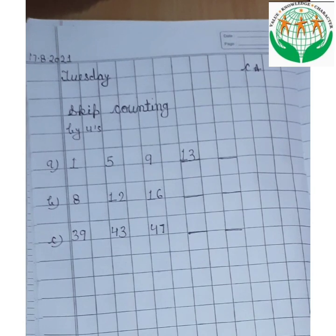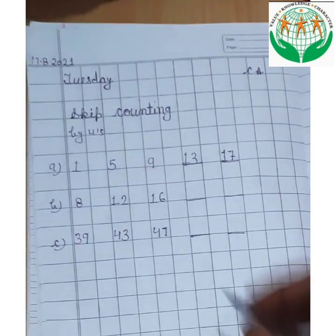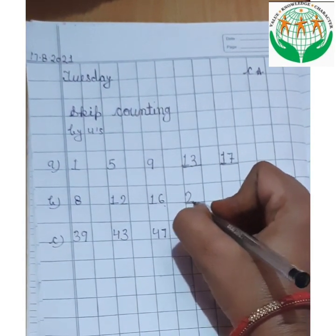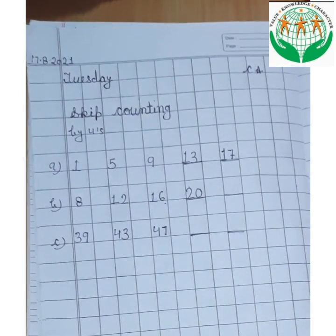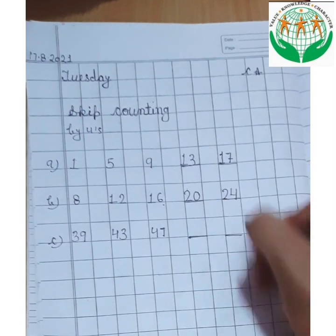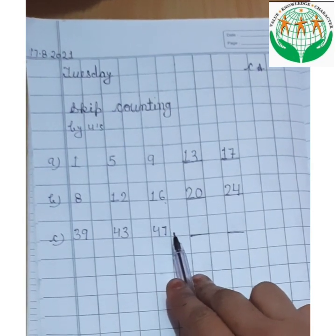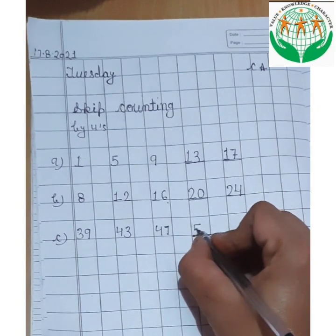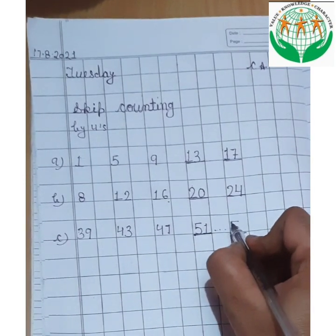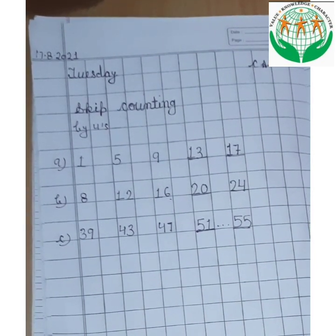We skip 14, 15, 16 and write here 17. After 16 we skip 17, 18, 19 and write here 20. Then we skip 21, 22, 23 and write here 24. What comes after 47? We skip 48, 49 and 50 and write here 51. Skip 52, 53, 54 and write here 55. These are skip counting by 4's.